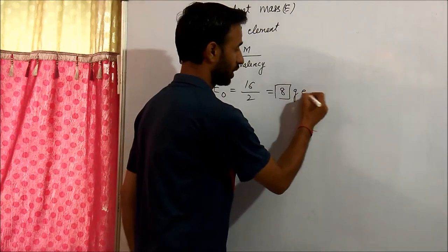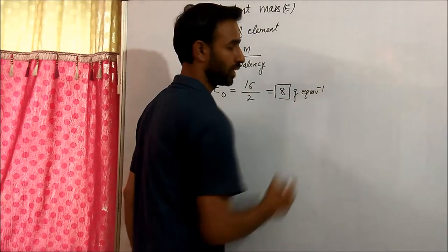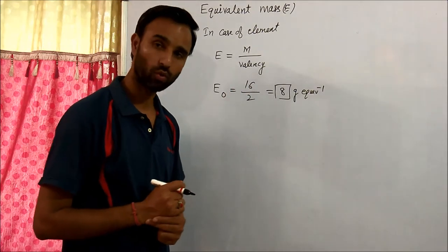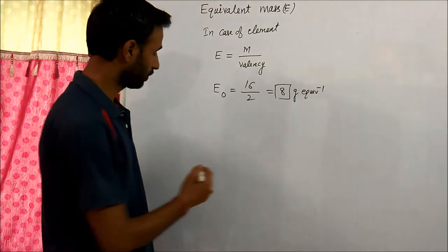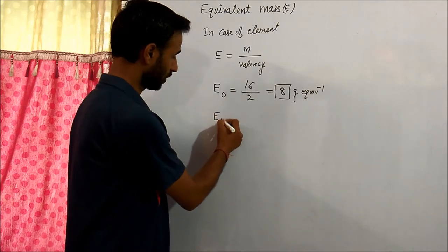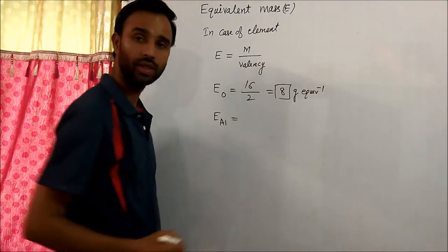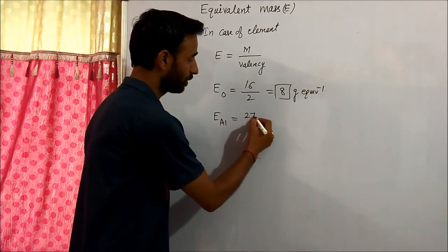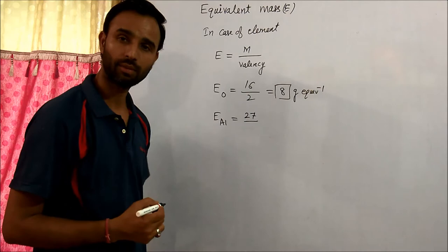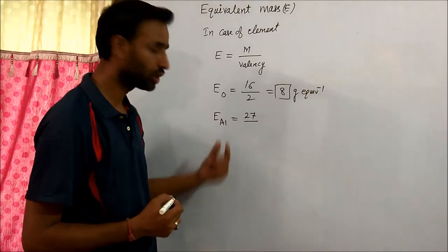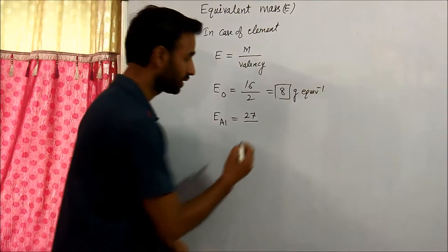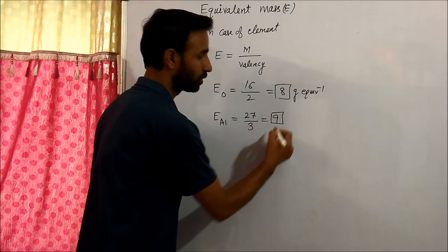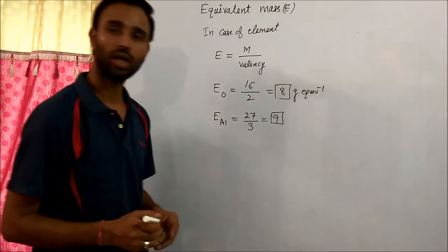The unit is gram per equivalent, just like molar mass is gram per mole. Now, for the equivalent mass of aluminium: the molar mass of aluminium is 27, and the valency of aluminium is 3. So, 27 divided by 3 gives 9 as the equivalent mass of aluminium.